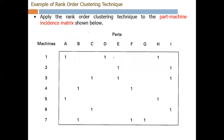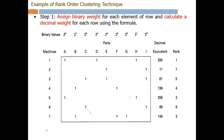Now we will take an example for the rank order clustering technique. This figure shows the part-machine incidence matrix. As I have explained, part A has interaction with machine 1, and part E has interaction with machine 3. Now, how do we arrange these parts into part families? For this purpose we apply the rank order clustering technique step by step.